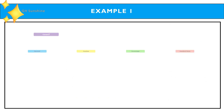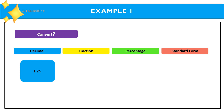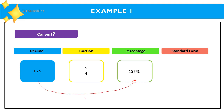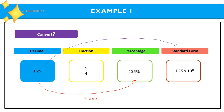Let's try together. Example 1: from decimal form 1.25 — to fraction form: 5 over 4. To percentage form: multiply by 100, so the answer is 125%. To standard form: there is only one number before the decimal point, and the decimal position does not change, so the answer is 1.25 times 10 to the power of 0.